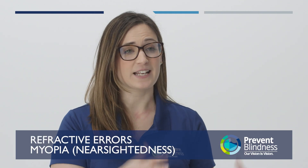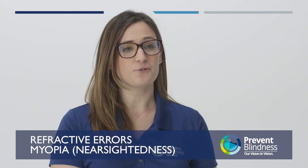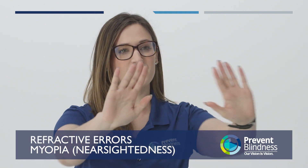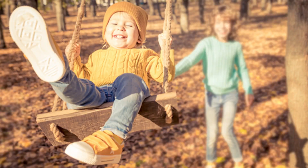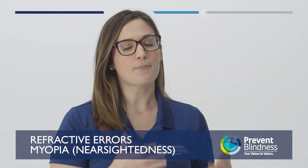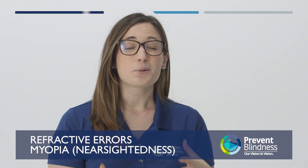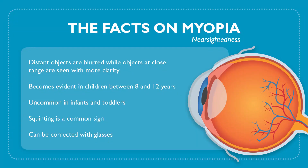Myopia, or nearsightedness, means that you can see up close but you're going to struggle to see in the distance. Like we see in this image, the little boy on the swing is very clear, but the girl behind him is blurry. With myopia, this is going to be pretty uncommon in our infants and toddlers. Generally speaking, we see children receive their first diagnosis of myopia between eight and 12 years old, usually in the years around puberty.